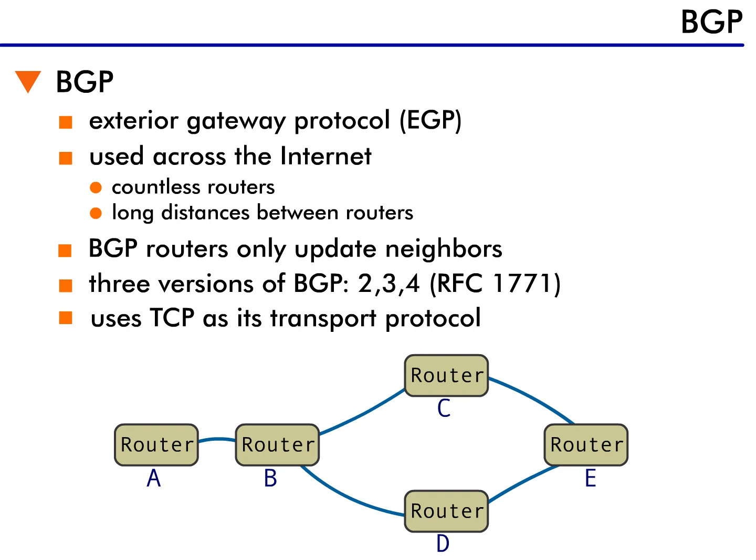BGP also uses the concept of neighbors to exchange information. Instead of routers exchanging information with all other routers, like when RIP and OSPF are used, BGP routers are configured to communicate with specific neighboring routers. This works best when large numbers of routers are connected, like within the Internet.